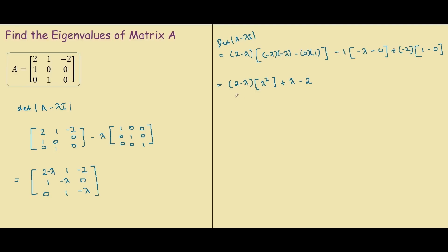So after finding the determinant, what you want to do is make this equal to 0. So basically saying this equals 0, so that we can solve for lambda.